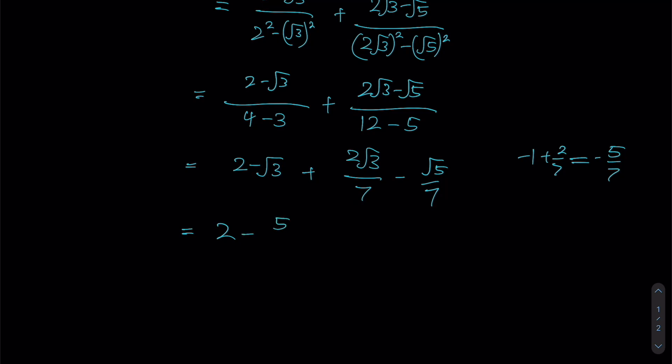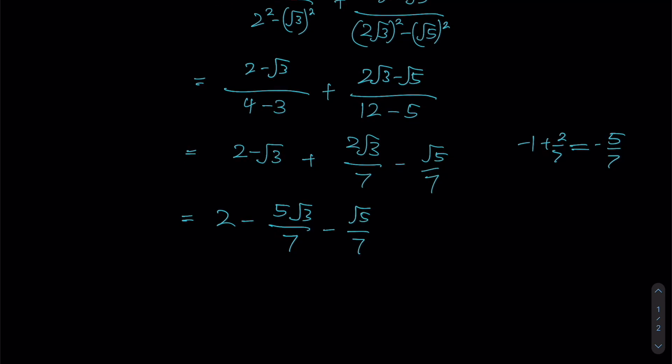Therefore, I would have minus 5 root 3 over 7. Now, root 5 over 7 is one of its kind and therefore it will be left alone in this manner. So if we look at the form that we have right now as our answer,